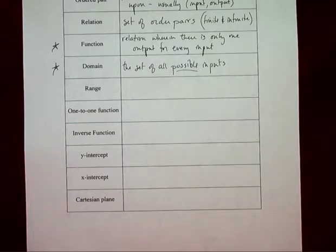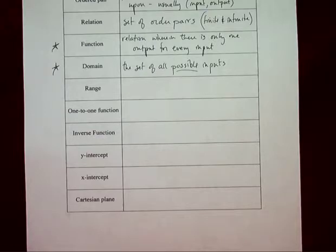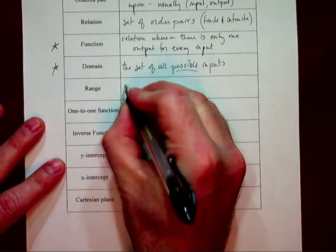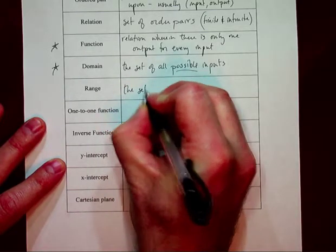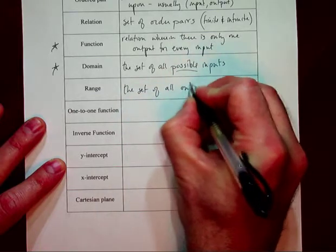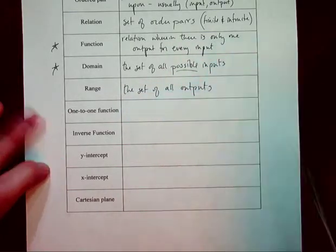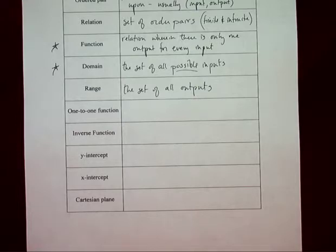The domain deals with inputs, which is the independent variable. The range deals with outputs, or the dependent variable. By very definition, the dependent variable — the idea of possibility is extinguished already. The range is simply the set of all outputs.